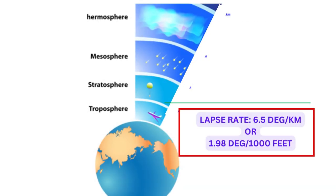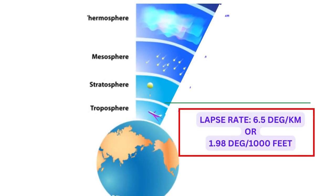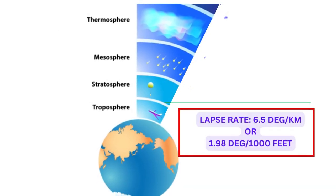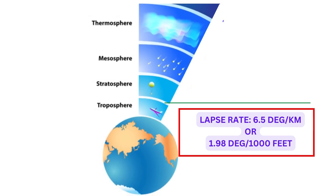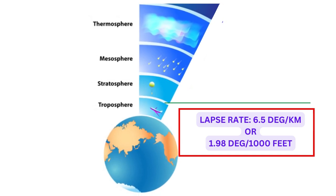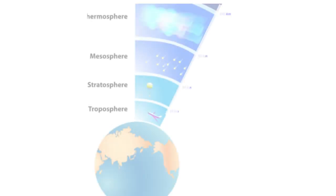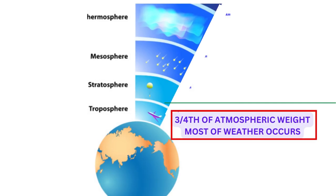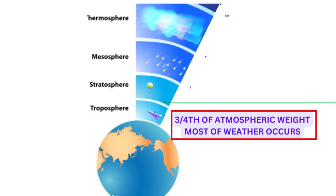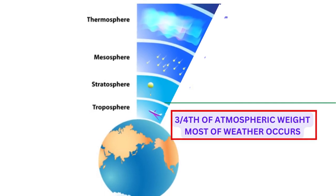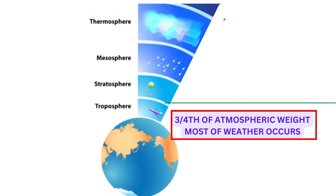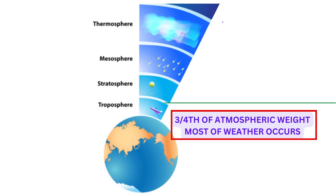In the troposphere, the lapse rate is 6.5 degrees per km or 1.98 degrees per 1000 feet. Troposphere consists of three-fourths of the total atmosphere in terms of weight, and most of the weather phenomena occurs in the troposphere.